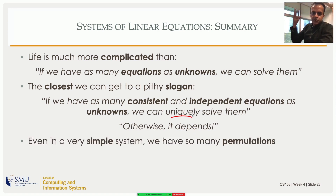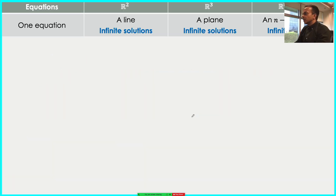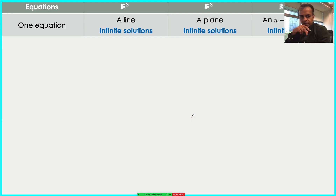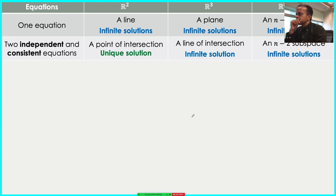Even for a simple two-equation system, there were many permutations. With many more variables and equations it becomes very difficult to determine what's consistent and what's inconsistent. Let's summarize what we know in R2 and R3 and then generalize to Rn. We worked with two variables, i.e., R2; we can extrapolate to R3 where we can still visualize; and then to Rn where n > 3 and we extend our mathematical intuition. In R2, one equation gives a single line — infinitely many solutions.